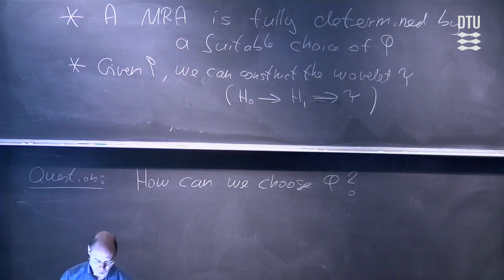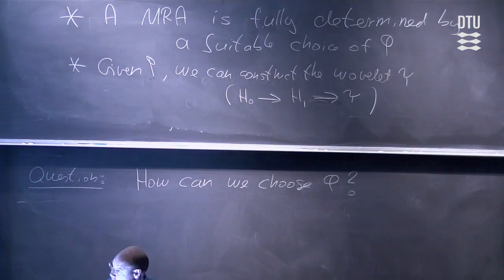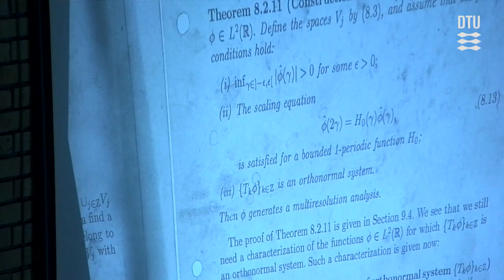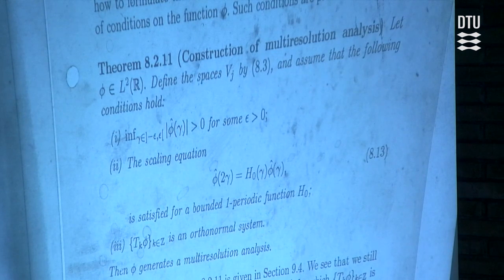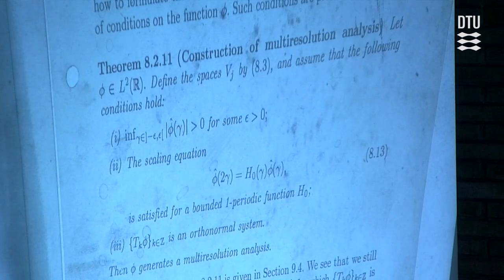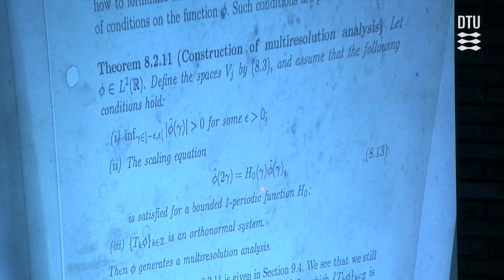Instead of writing down a long statement, I will just show you how we can formulate suitable conditions. This is actually a theorem that you worked with already last week — theorem 8.11. What it says is that we have to pick a function φ and it has to satisfy three conditions. Let's discuss what the conditions say, starting with the second condition. What I already showed you is that if you have a multiresolution analysis, then φ satisfies a relationship: the Fourier transform of φ evaluated at γ equals h₀(γ) times the Fourier transform of φ. This is put as one of the conditions in the theorem — we have to choose φ such that this condition is satisfied.